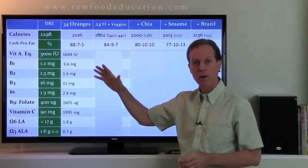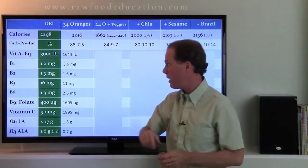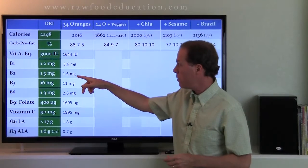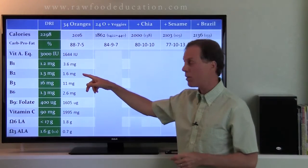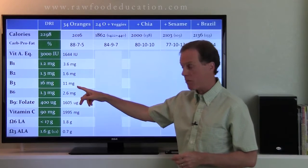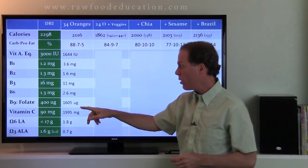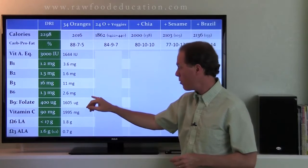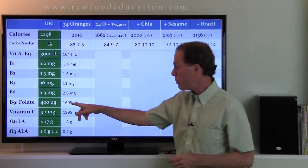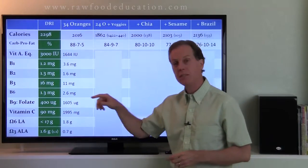So in any case, we're about halfway there for beta-carotene or vitamin A equivalent. B1 and B2, more than covered just from oranges. Didn't quite make it for B3. For B6, got about double. What about B9, also known as folate? Got about four times more than they say you need.